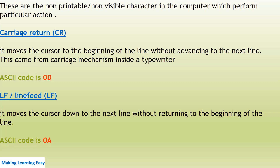First is the carriage return (CR). It is used to move the cursor to the beginning of the line without advancing or going to the next line, so this character works within the same line. This came from the carriage mechanism inside a typewriter. The ASCII code is 0D in hexadecimal.